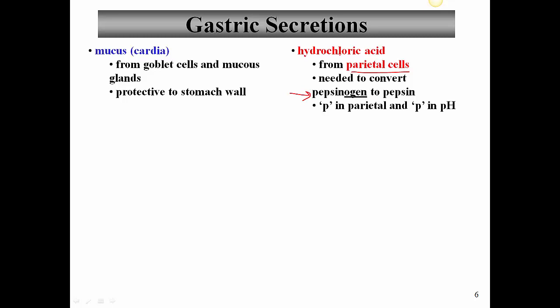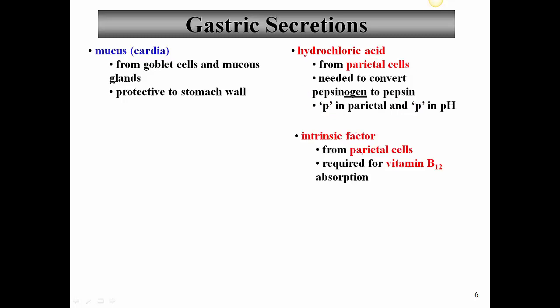A good way to remember that parietal cells secrete hydrochloric acid is to remember the P in parietal and the P in pH. Another function of the parietal cells is to secrete intrinsic factor, important for the absorption of vitamin B12 later on in the ileum of the small intestine. If we don't have intrinsic factor — a glycoprotein bound to vitamin B12 — that vitamin B12 will pass right through the body. Since vitamin B12 is important for hematopoiesis, the failure to absorb it gives rise to a type of anemia called pernicious anemia.